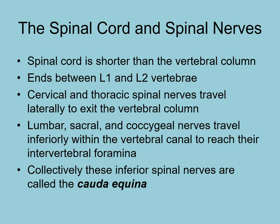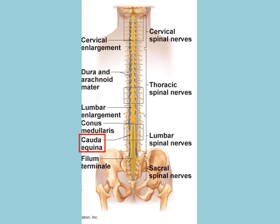The spinal cord is shorter than the vertebral column, ending between L1 and L2. The cervical and thoracic spinal nerves travel laterally to exit the vertebral column, but the lumbar, sacral, and coccygeal nerves must travel inferiorly down through the vertebral column to reach the intervertebral foramen where they exit. Collectively, all of these inferior spinal nerves are known as the cauda equina.